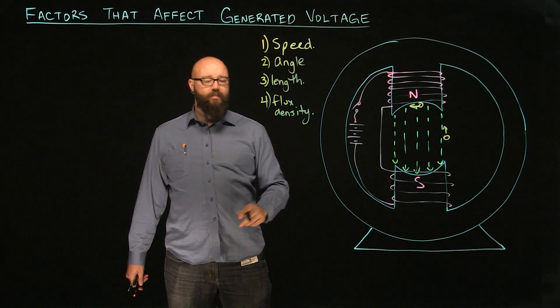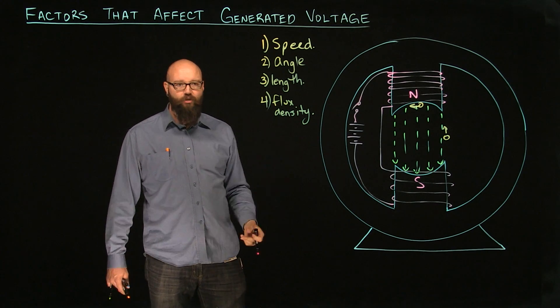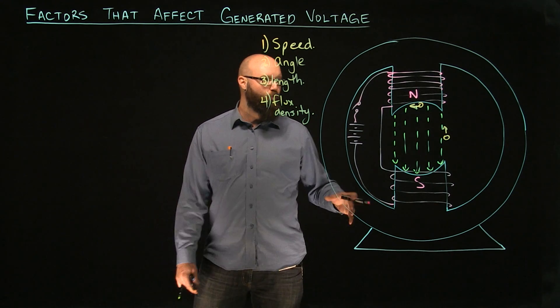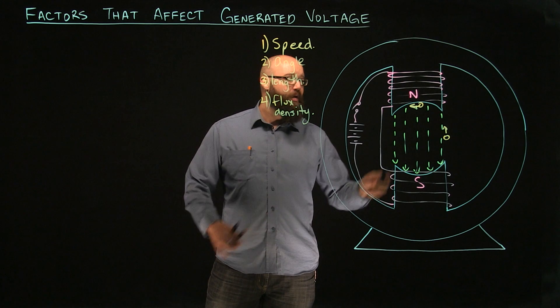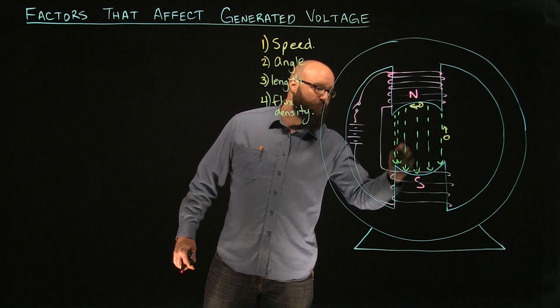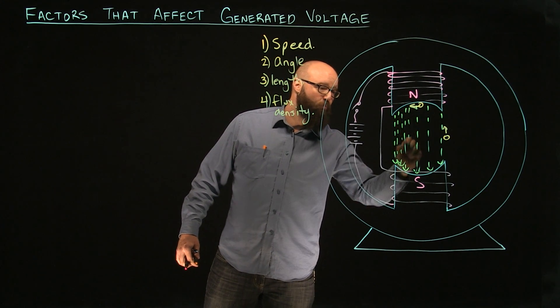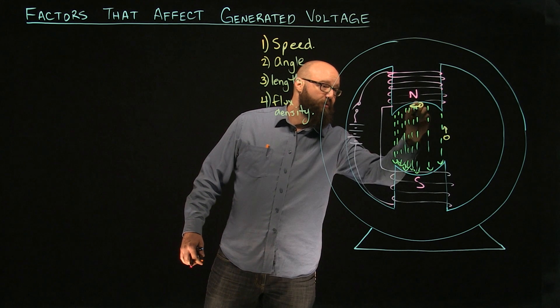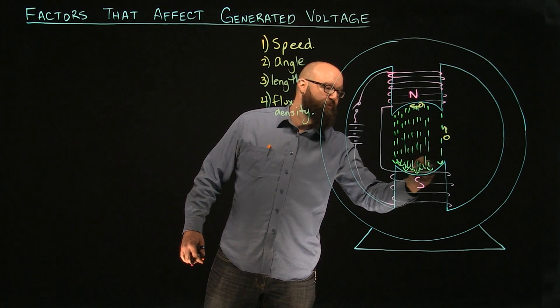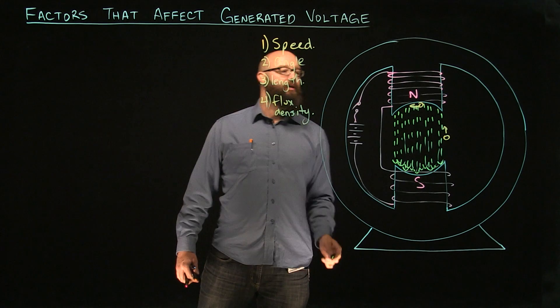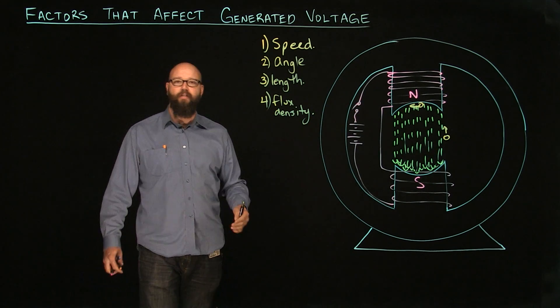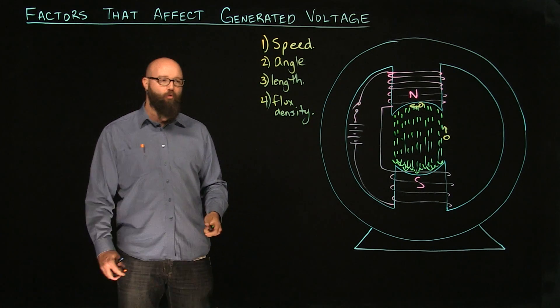If we energize this right now, what we're doing is actually creating more induction. We're creating more inductance. We're getting a stronger magnetic field. And by doing that, we are getting much more flux density. With the same conductor moving at the same speed, because of the increased amount of lines of flux, now we can actually generate a lot more voltage.